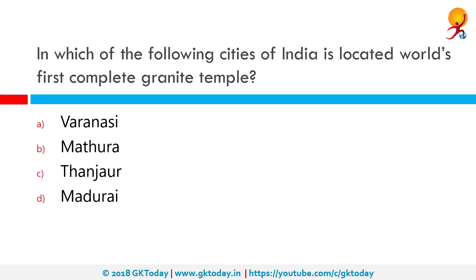In which of the following cities of India is the first complete granite temple in the world located? The first complete granite temple in the world is the Brihadishwara Temple, also known as Raja Rajeshwaram. It is a Hindu temple dedicated to Shiva, located in Thanjavur in Tamil Nadu.